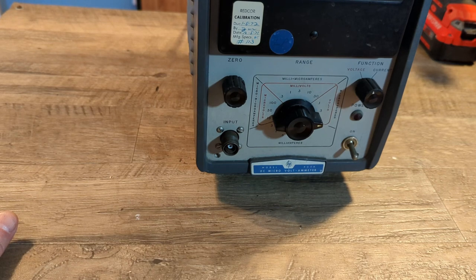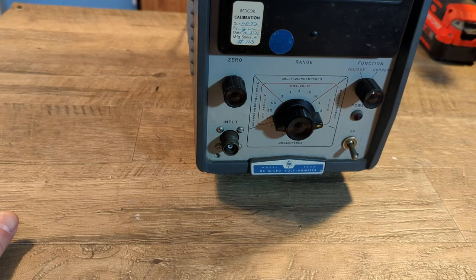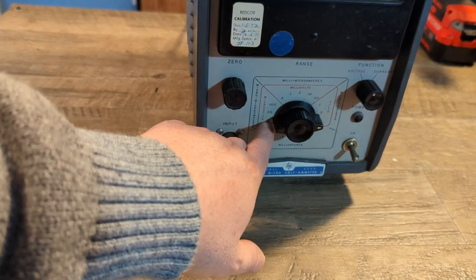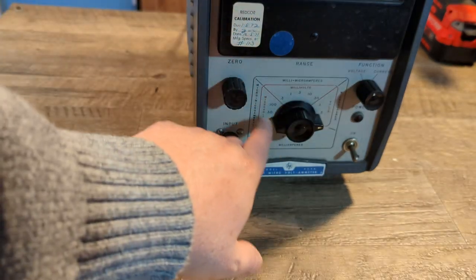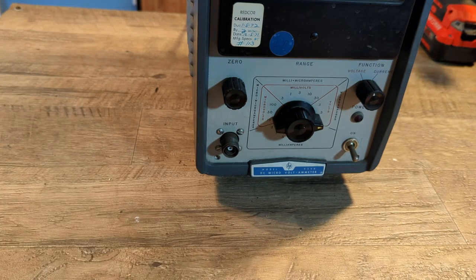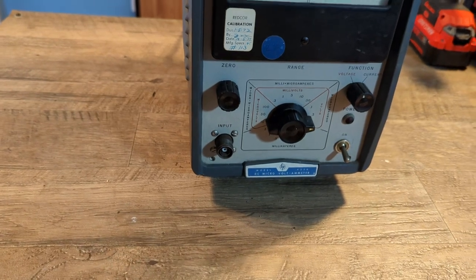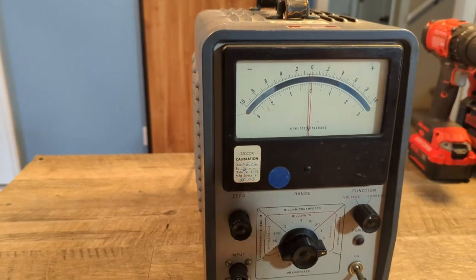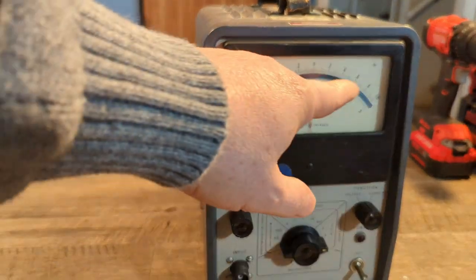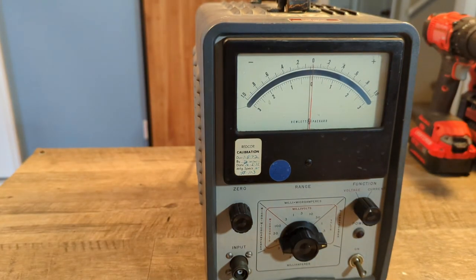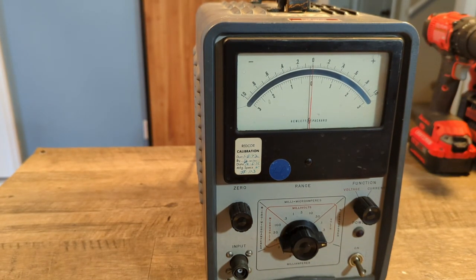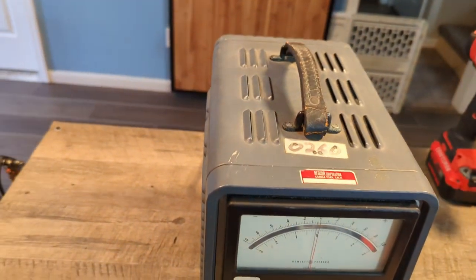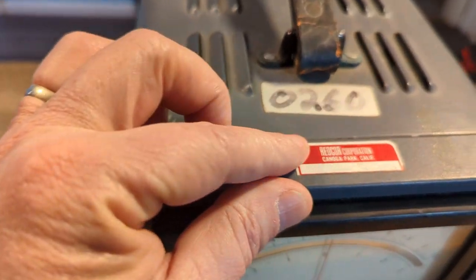So it can go all the way down to like 10 picoamps or up to probably one picoamp on the top, all the way down to one picoamp - very very small amperage. So it's got a very nice meter movement with the parallax mirror on it, which is great.